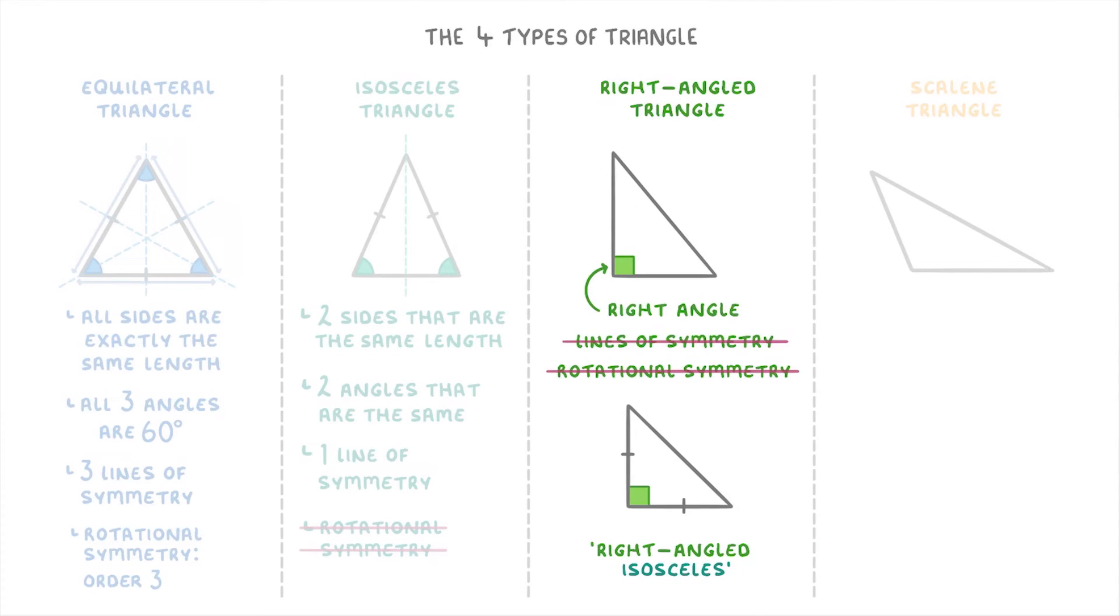But if it happens to be a right angled isosceles triangle, which is where it has a right angle and two sides that are the same length, then it will have one line of symmetry.